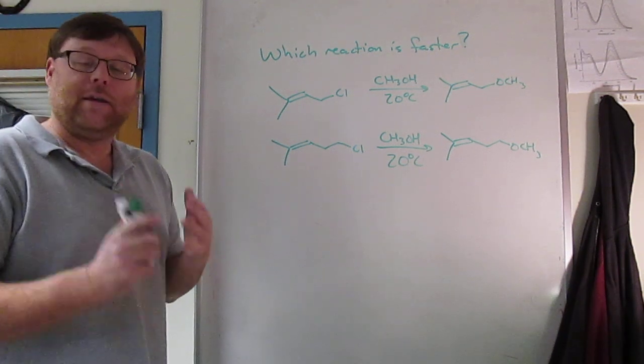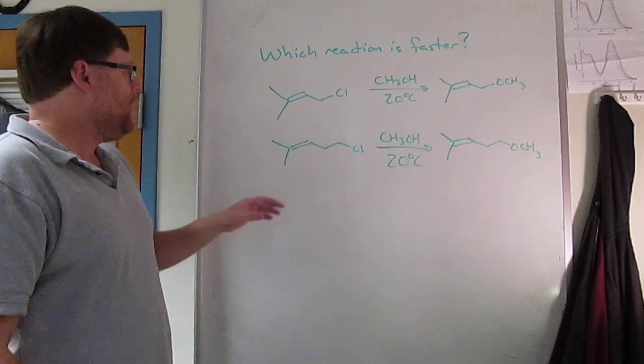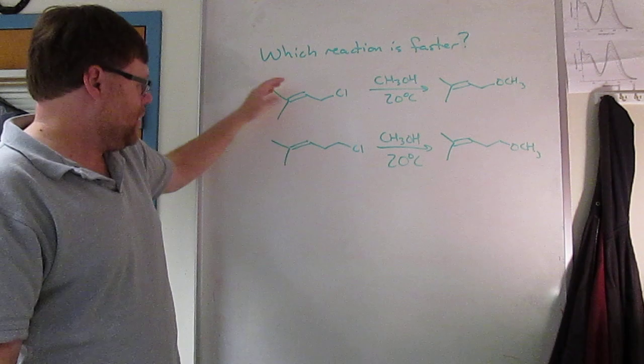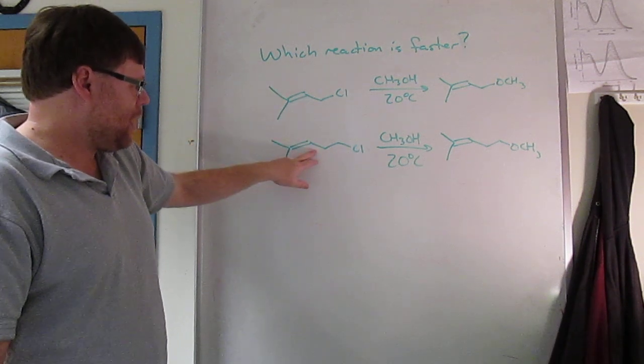Using the scientific method, you always want to just change one variable at a time. If I had two differences, you know, the difference here is in the starting material - allylic chloride versus primary alkyl chloride.